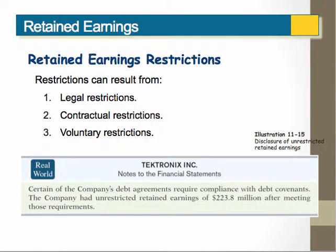Retained earnings are supposed to be distributed to the shareholders in the form of dividends. However, there may be times when the organization has to restrict the retained earnings from distributions because of legal, contractual, or voluntary reasons. Many times when you borrow money from a bank, the bank will require that the company maintain a certain level of retained earnings to protect the bank for their loan. Also, for legal purposes, there may be restrictions on retained earnings so that a company doesn't zero out retained earnings and cause the company to go into a deficit.